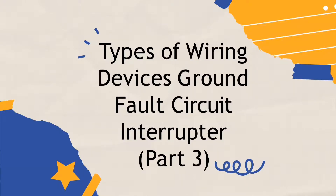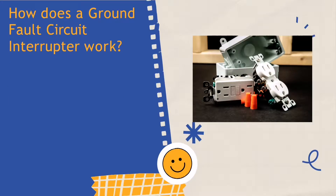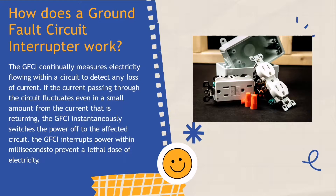Our topic for today is about types of wiring devices: ground fault circuit interrupter. Let us first know how does GFCI work. The GFCI continually measures electricity flowing within a circuit to detect any loss of current. If the current passing through the circuit fluctuates, even in a small amount from the current that is returning to complete the circuit, the GFCI instantaneously switches the power off to the affected circuit.